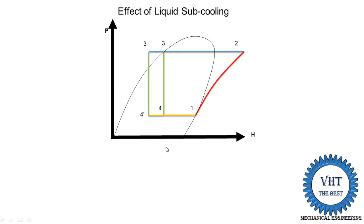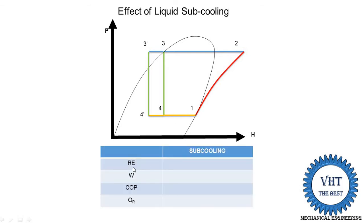Using this diagram, we write down the four factors: refrigerating effect, work done, COP, and heat rejection. For the refrigerating effect: in the earlier case without the subcooler, the refrigerating effect is H1 minus H4, which is a smaller length. By installing the subcooler, the length increases from 4-dash to 1. The additional length is from 4-dash to 4. So when we calculate H1 minus H4-dash instead of H1 minus H4, the answer is larger — meaning the refrigerating effect is increased.